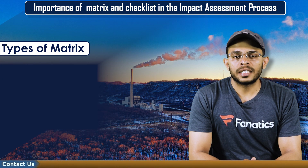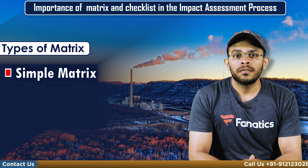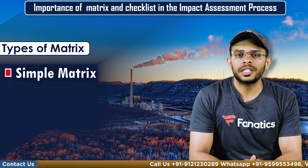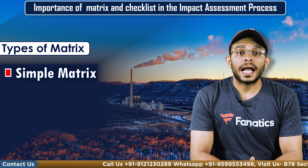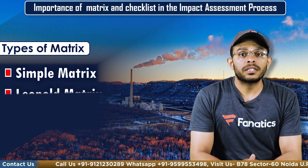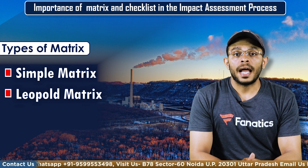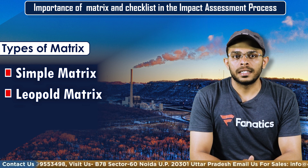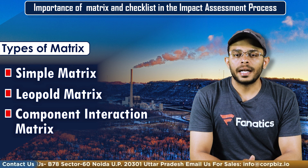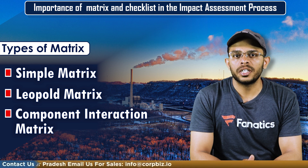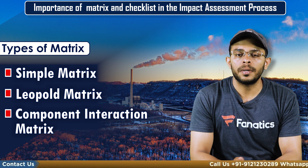Now let's understand the types of matrix used in the assessment process. The first is a simple matrix, which is a table that identifies the environmental factors and potential effects of those factors that may be impacted. The next is the Leopold matrix, which is a more detailed version and used in comprehensive EIAs. The third is the component interaction matrix, which assesses the interaction between different components with potential indirect or cumulative impacts that may be overlooked in a simple matrix.